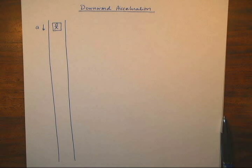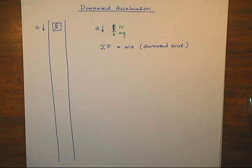When you accelerate downward, you feel light. Newton's second law says that the net force must be downward in the direction of the acceleration, so your normal force must be less than your weight.